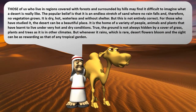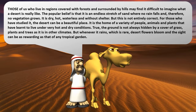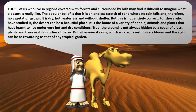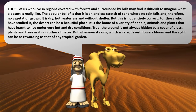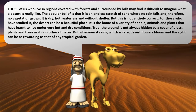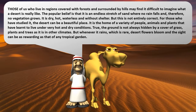The popular belief is that it is an endless stretch of sand where there is no rainfall and vegetation. It is difficult to live in a desert if we are from a region covered with forests and surrounded by hills. Most of the desert area is hot, dry, and waterless without shelter. But some areas are very beautiful and a variety of people, animals, and plants live under this very hot and dry condition.